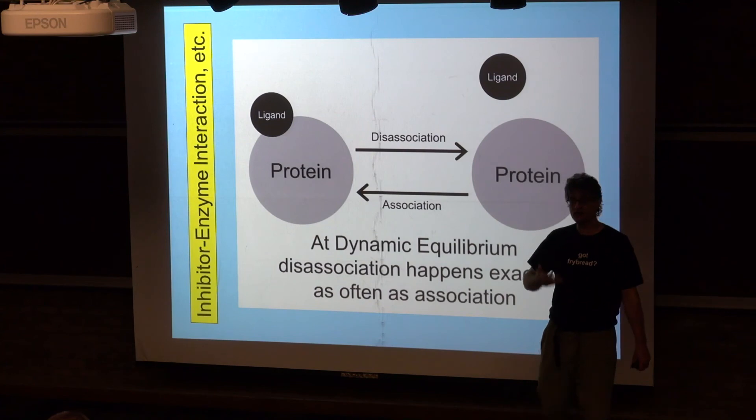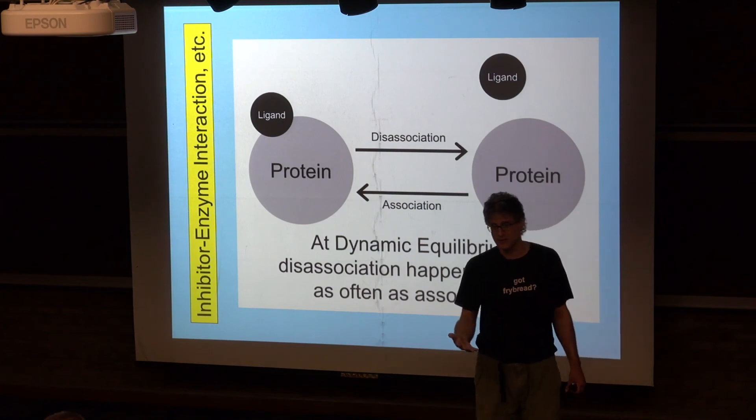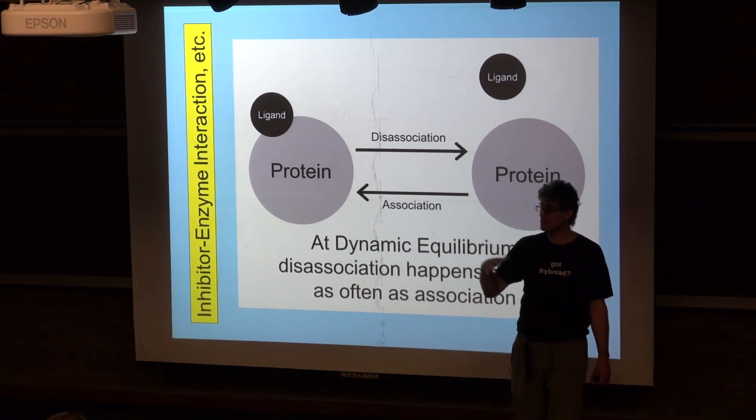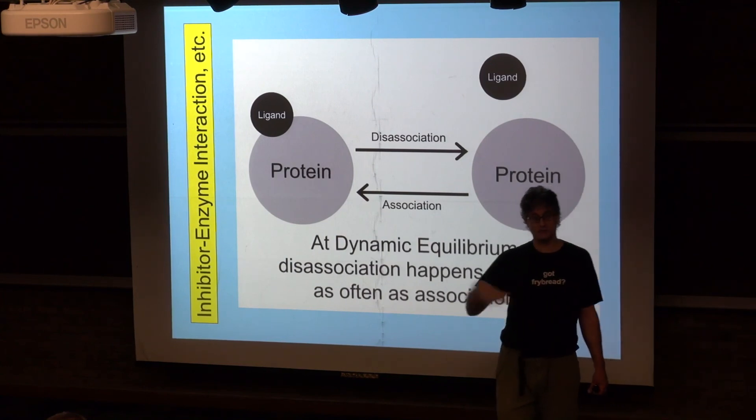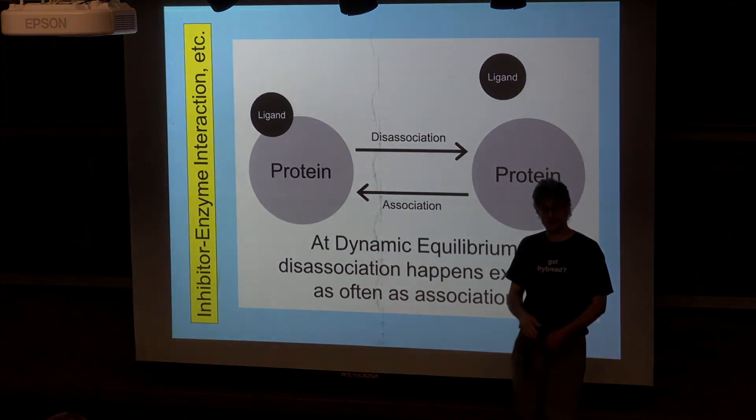If it's an allosteric inhibitor, the more inhibitor you have around, the less functional the enzyme is. But it's not an absolute non-functionality. The enzymes are less available to the substrate rather than completely unavailable. When there's less ligand around, they're more available rather than necessarily 100% available.